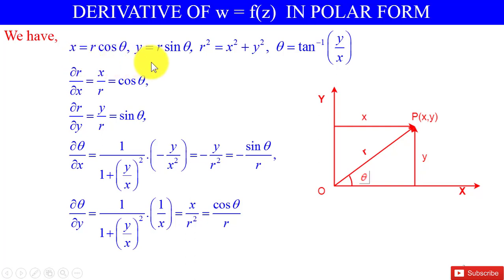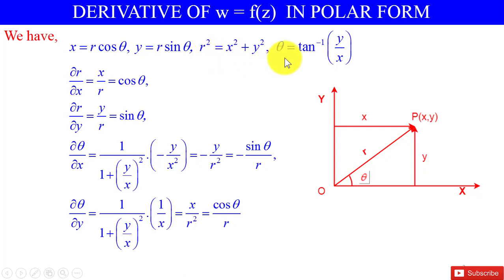We have x = r cosθ, y = r sinθ, r² = x² + y², and θ = tan⁻¹(y/x).